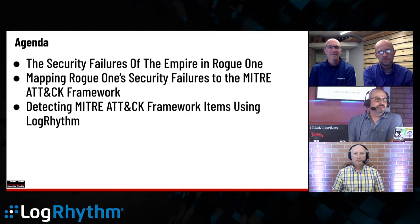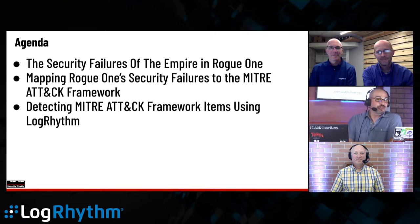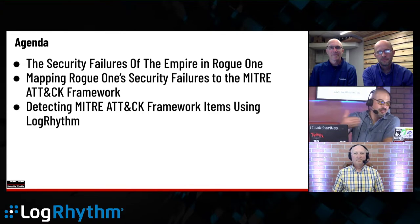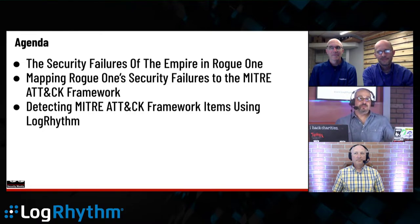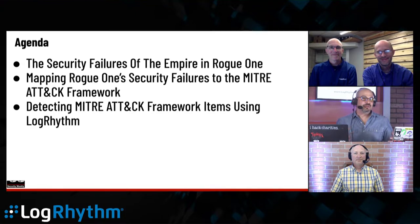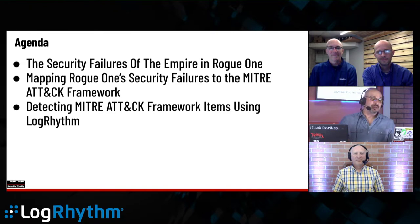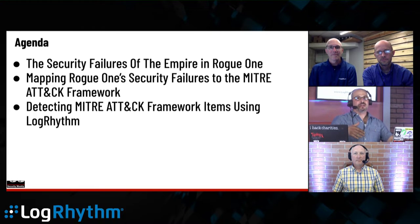Just a quick agenda. We're going to go through the security failures of the Empire in Rogue One. My youngest son is quite the Star Wars fan, which is awesome for me because the movies are on pretty much all the time, much to my wife's chagrin. Watching Rogue One, I thought it was a really good story to help tell the story about the MITRE ATT&CK framework. If you haven't seen Rogue One, there may be some spoilers involved.